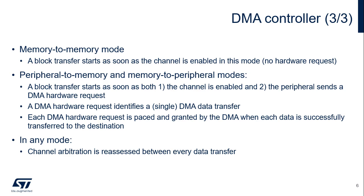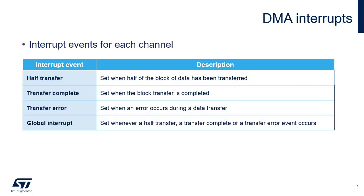A DMA hardware request identifies a single DMA data transfer. Each DMA hardware request is paced and granted by the DMA when each data is successfully transferred to the destination. In any mode, channel arbitration is reassessed between every data transfer. Each DMA channel can notify software with an interrupt triggered by any of four possible events: half-block transfer completion, block transfer completion, transfer error, or any of the three above events — in other words, global.